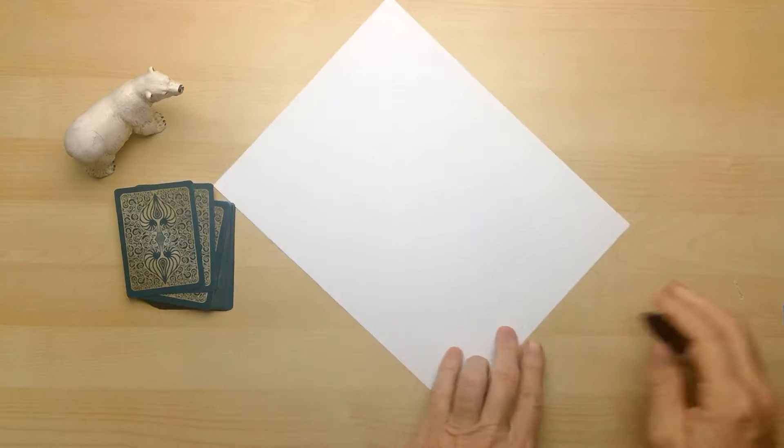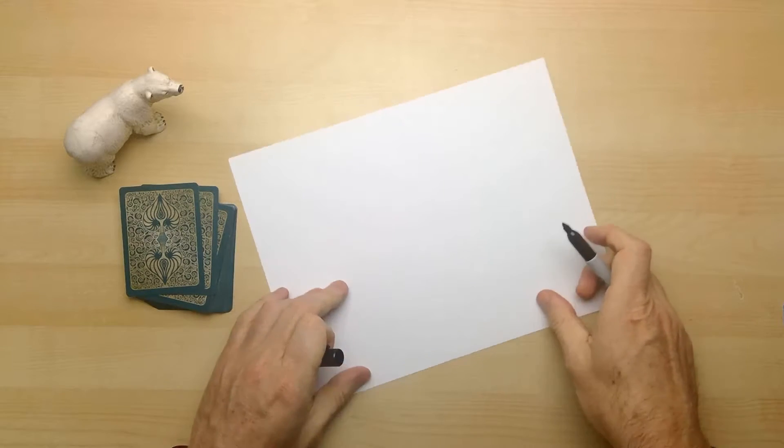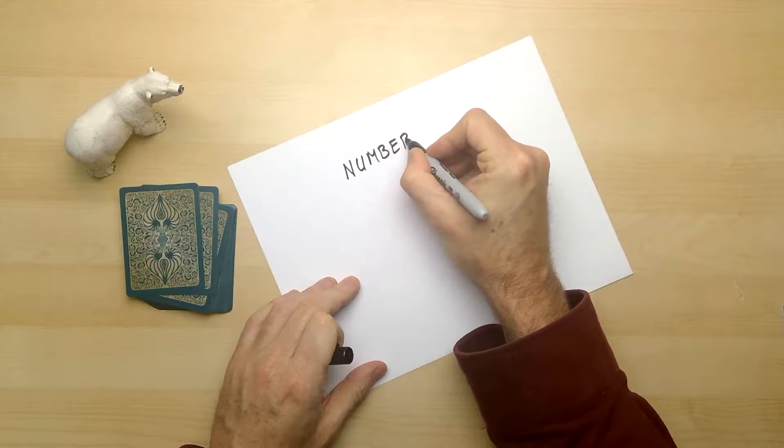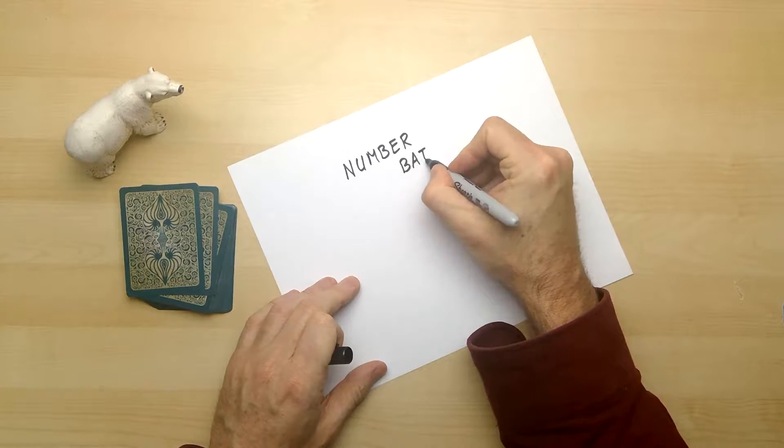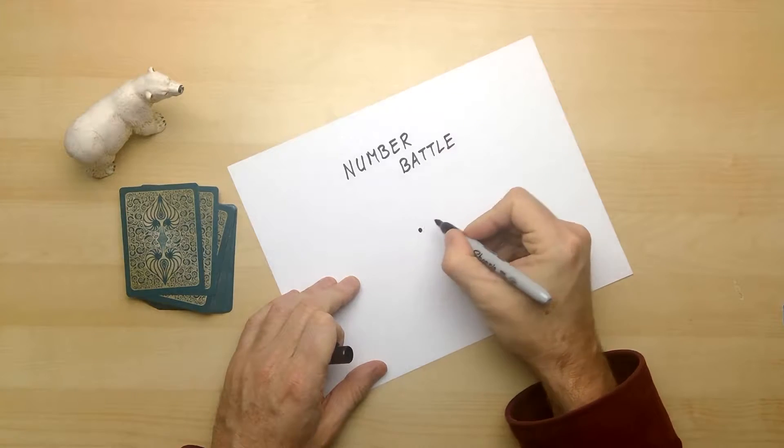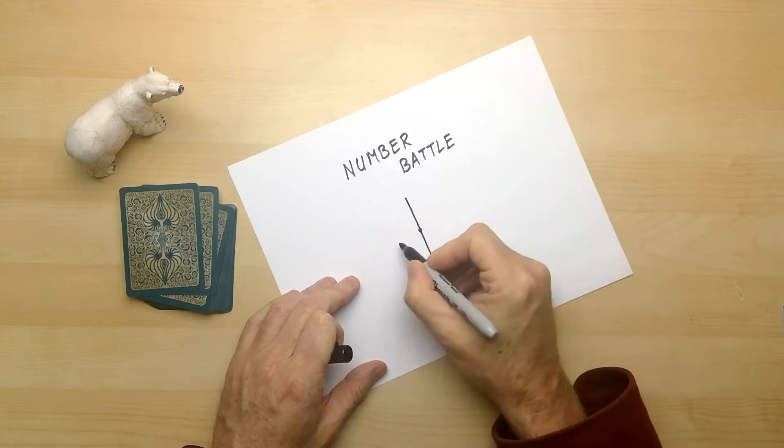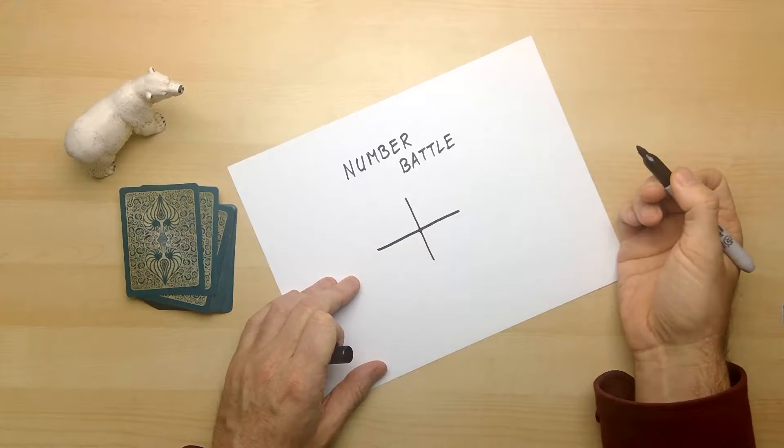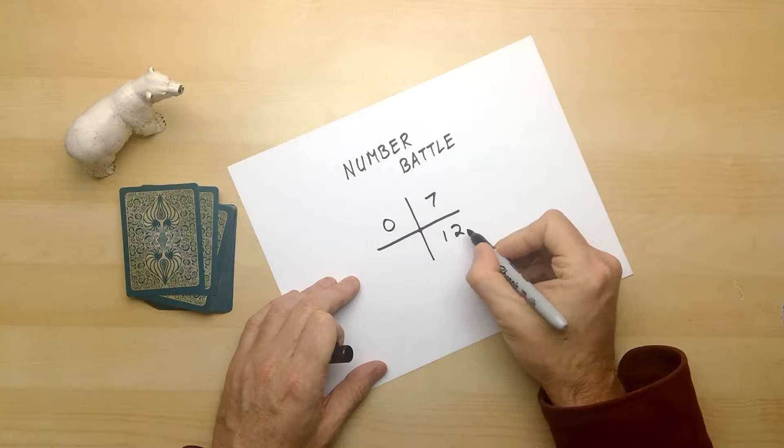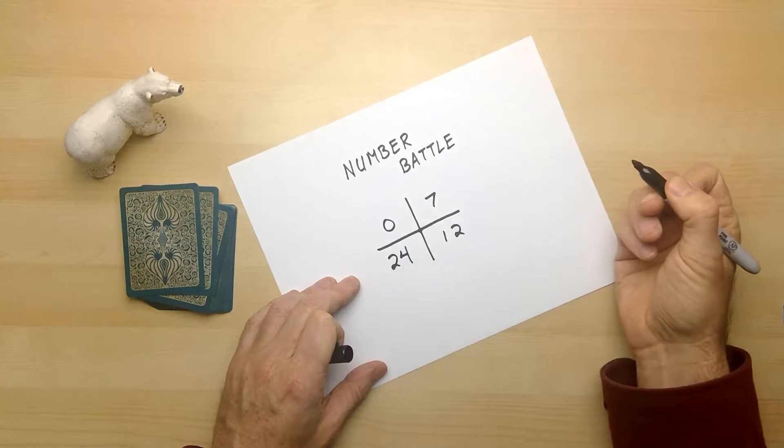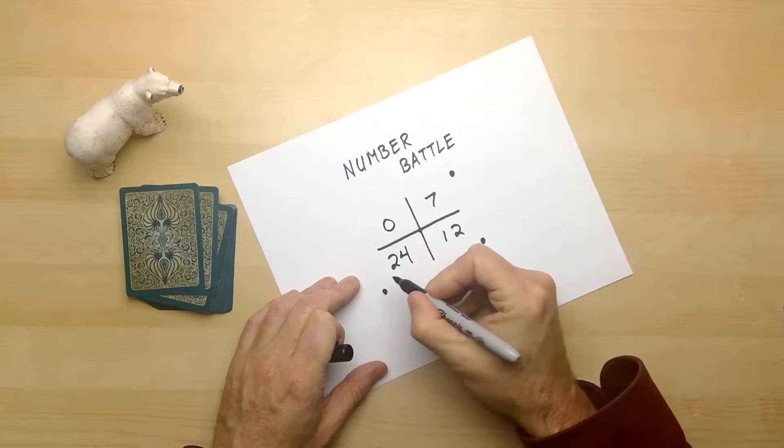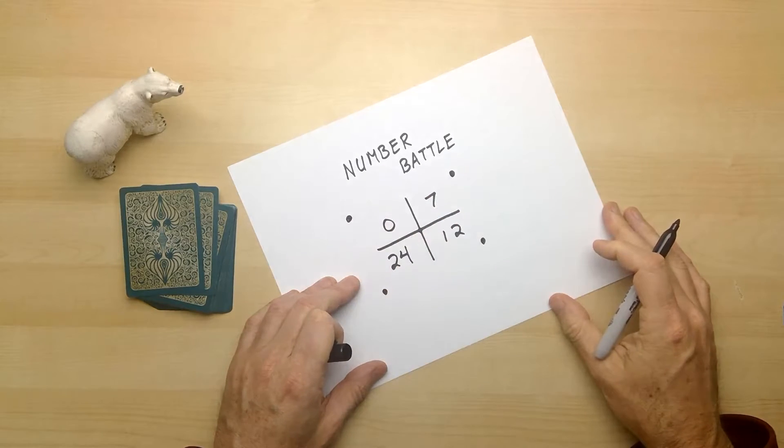So on your paper, let's go ahead and write that in the middle: Number Battle. And to make it interesting, I'm going to start with a dot in the middle of the page, and I'll make a line going through this way and through this way. And let's think of some good numbers. I like the number zero, I also like seven, I like 12, and I like 24. And to make this work out well for us, let's put dots in each of the corners. You'll understand what they're for in a little while.